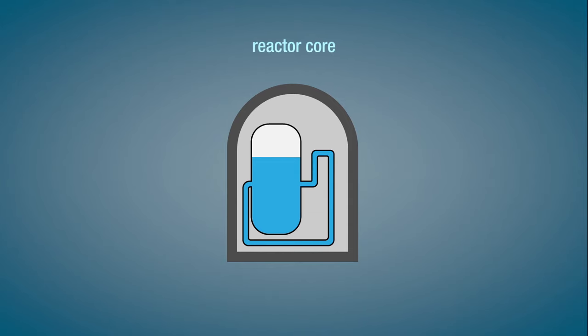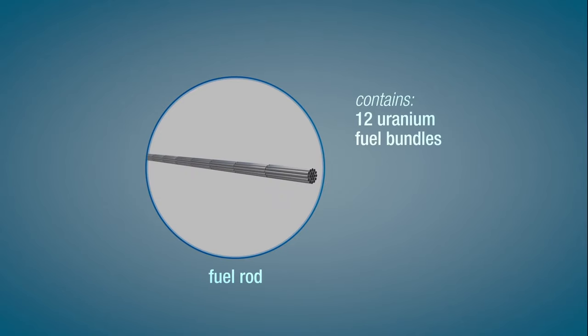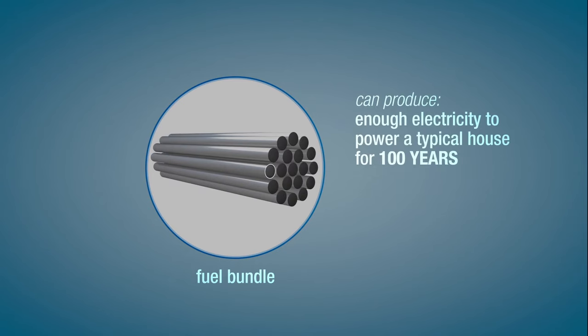The reactor core holds 380 fuel rods. Each rod contains 12 uranium fuel bundles weighing about 20 kilograms. One bundle can produce enough electricity to power a typical house for 100 years.